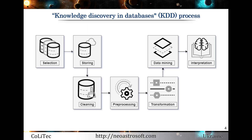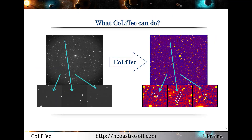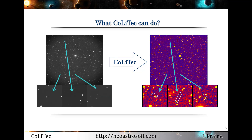How can we solve them? For proper processing, we need to use all steps from the knowledge-discovering database process, which contains the data mining stage. The Kalytec software implements all data mining steps during processing of different types of astronomical information, which is fed online in automated mode.